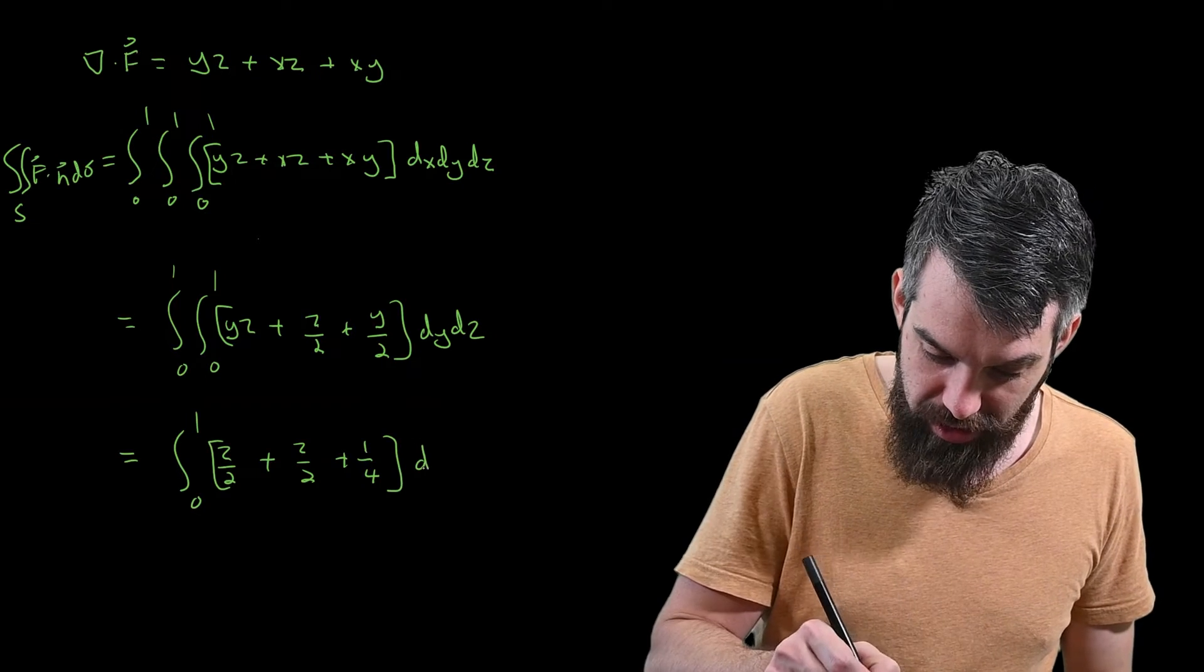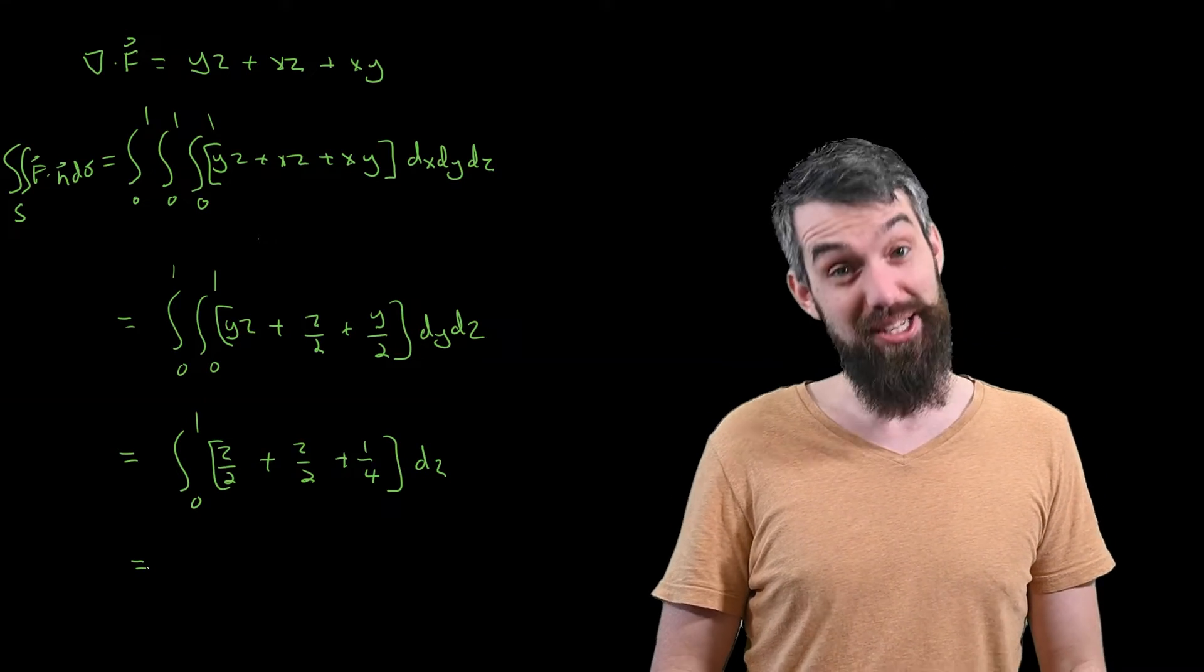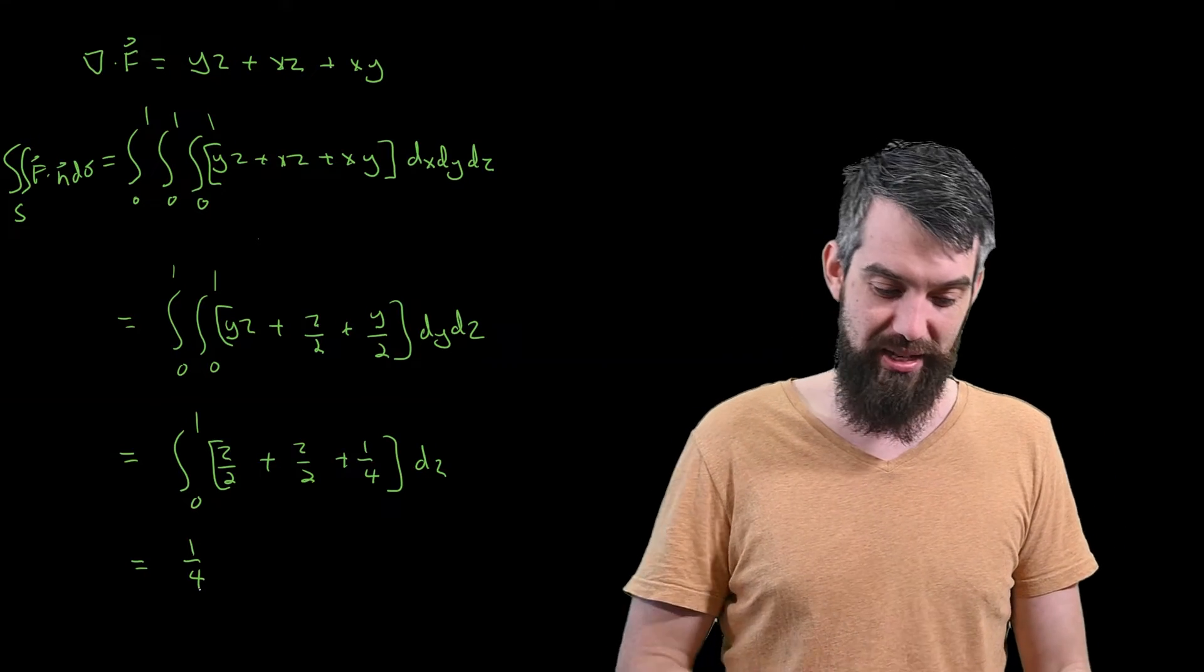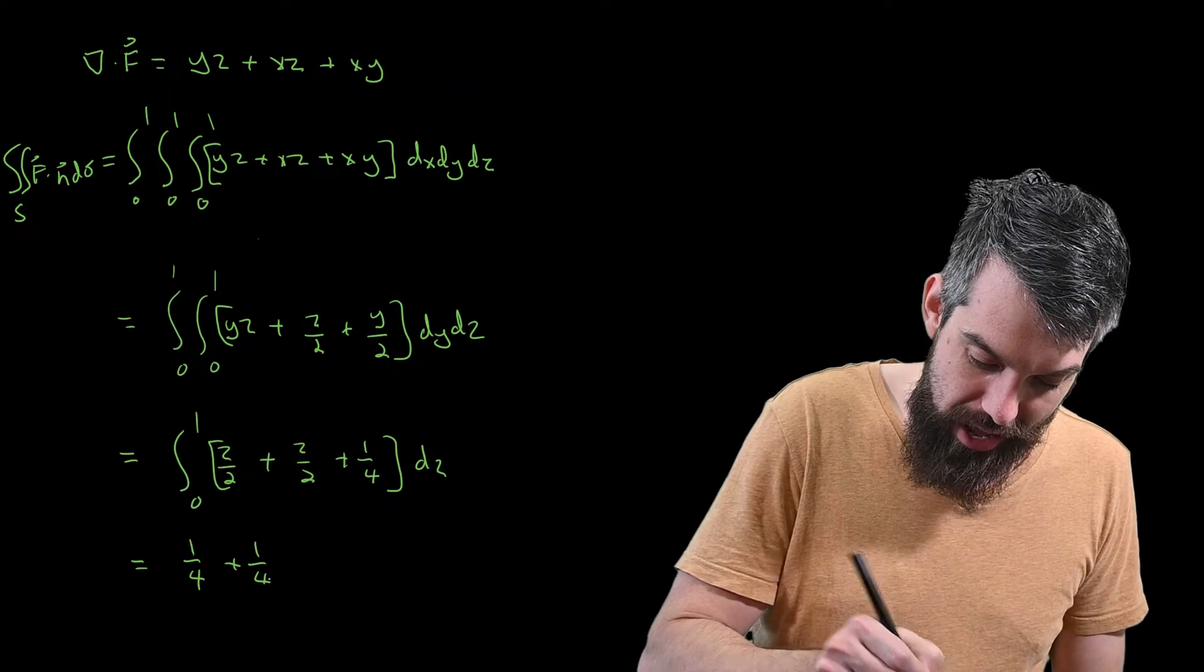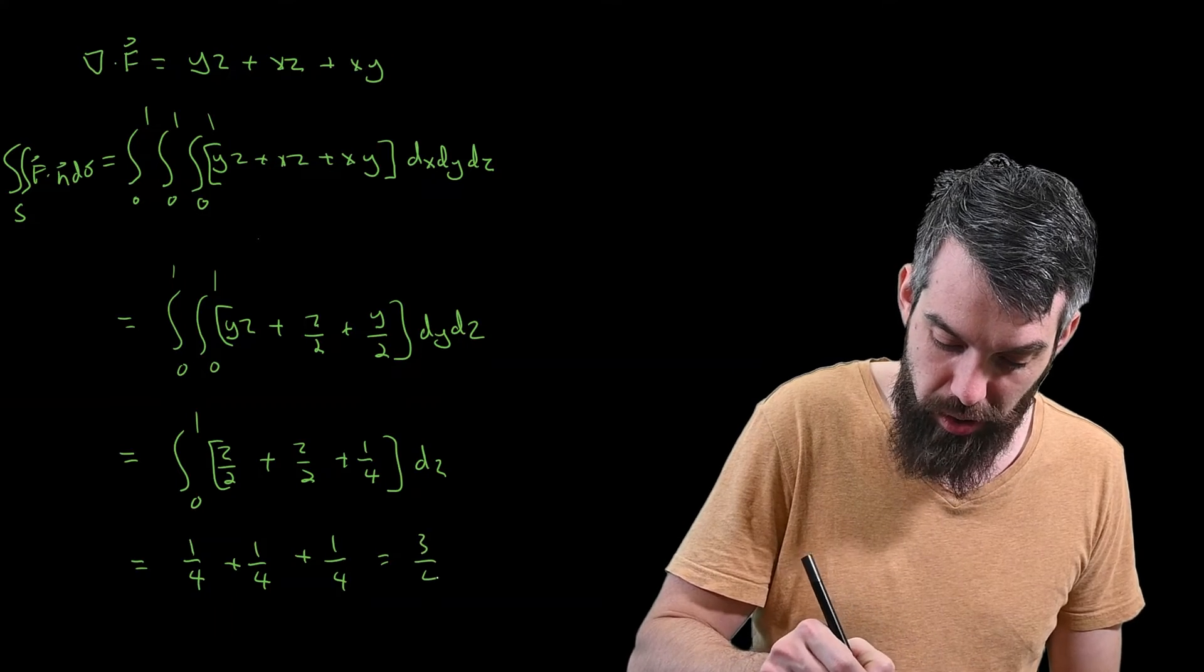And then all of this is integrated with respect to z, and we're going to get our final answer very shortly here. Z over 2 goes to z squared over 4, so that's going to give me a value of a quarter when I plug in the limits. Same thing, I have another quarter and a final quarter, and my final answer here is 3 quarters.